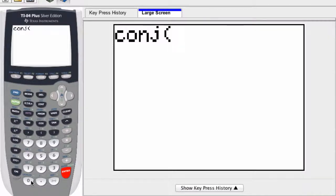and I enter in some number, some complex number, and it will automatically give me the conjugate. So if I enter in 3 plus i, and hit enter, it gives me the conjugate, 3 minus i.